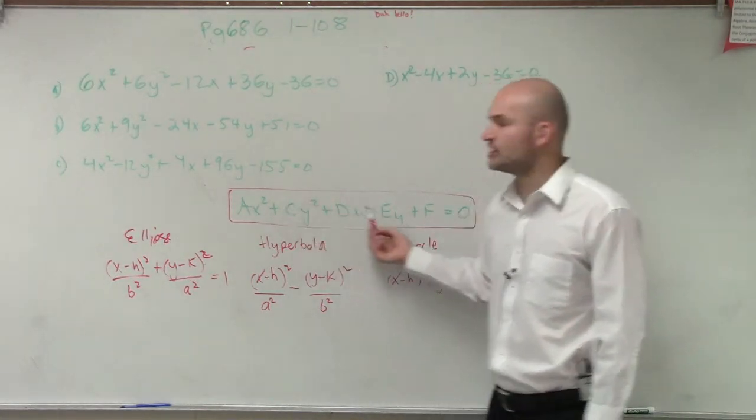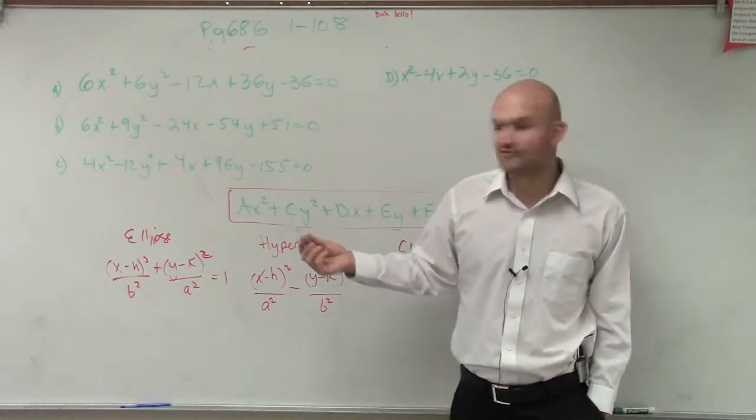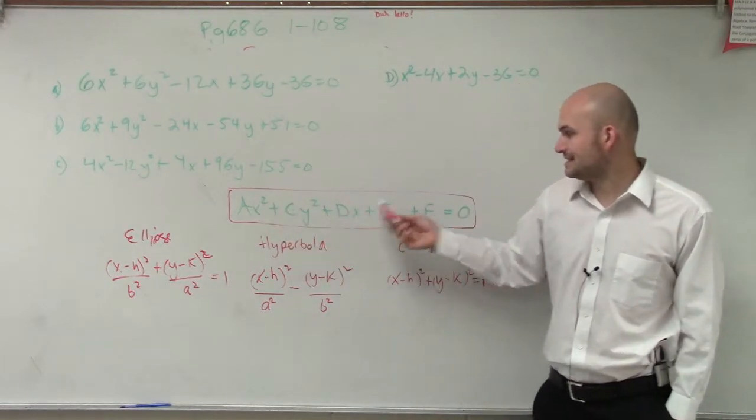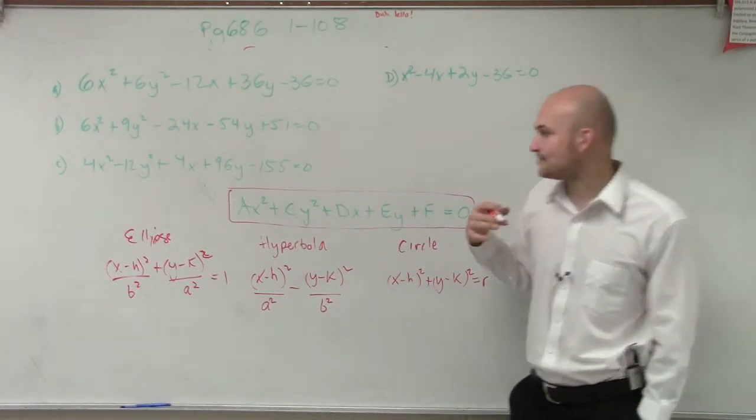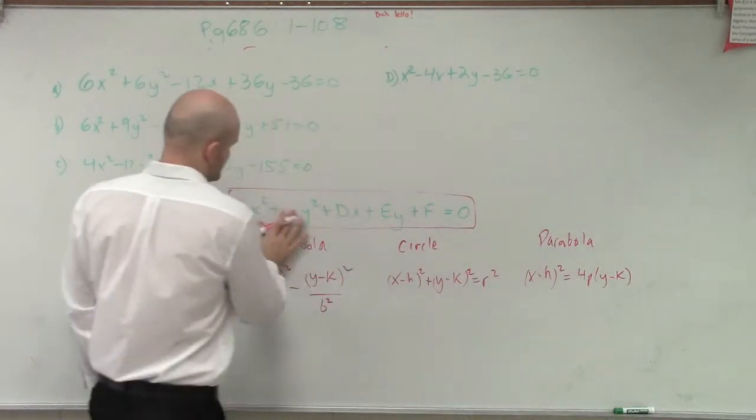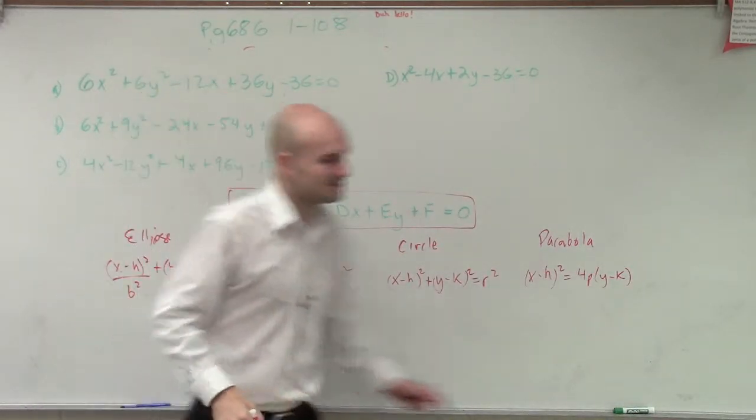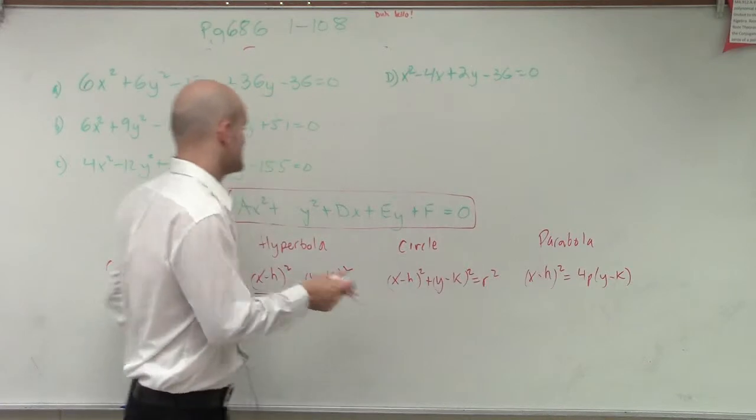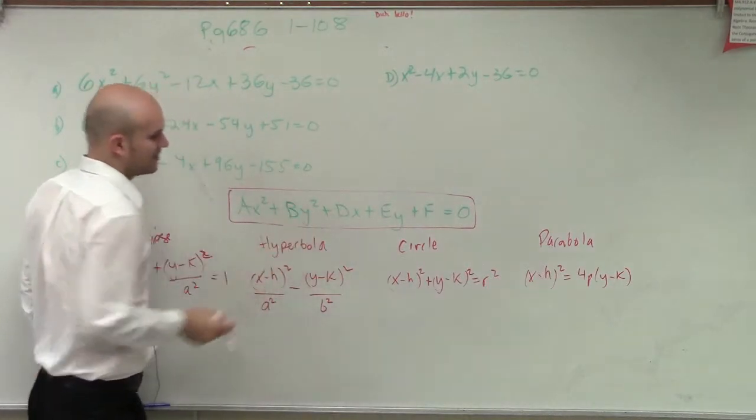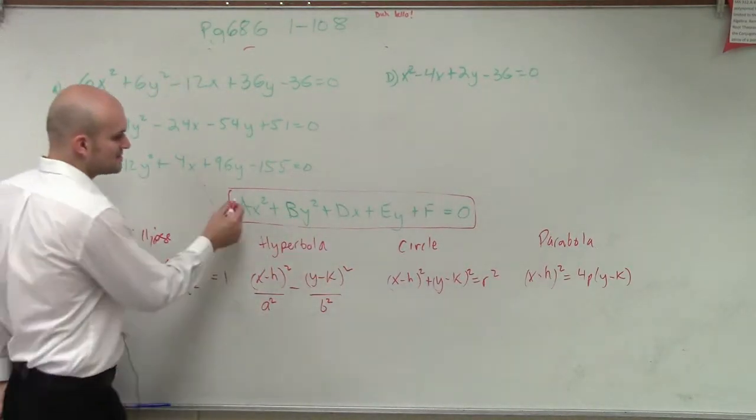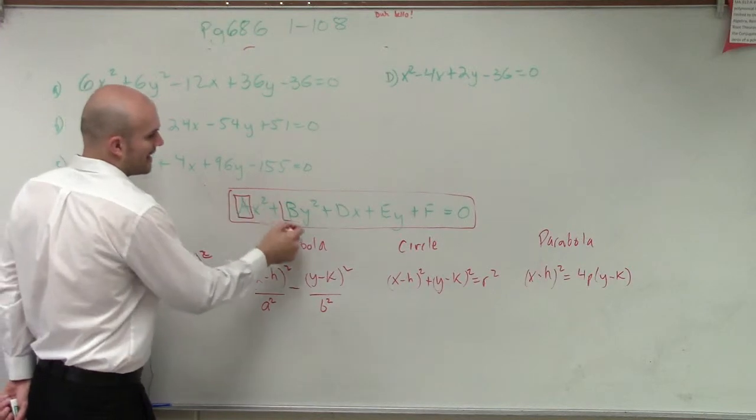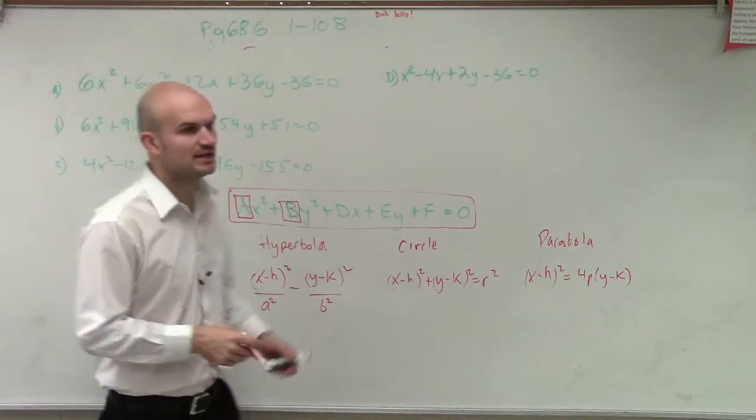All right? So if we look at this general equation, what we did is I gave some coefficients A, C, D, E, and F. All right? And what we're going to do, and actually let me change this to a B just to maybe kind of make this a little bit less confusing, even though I know previously we've done a C. But let's just focus on our A and our B coefficients.